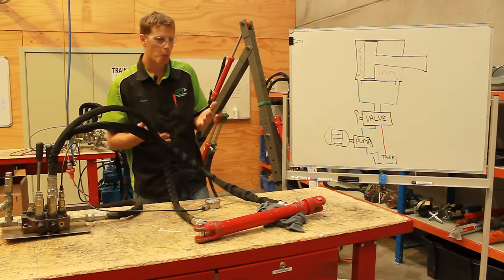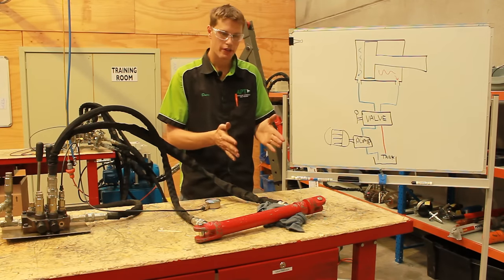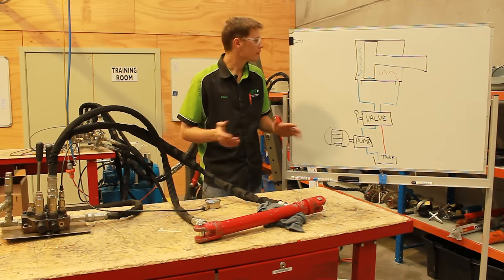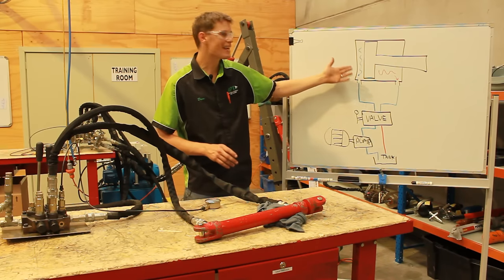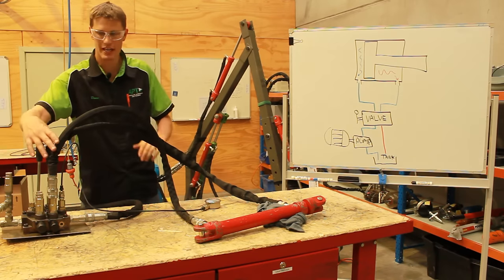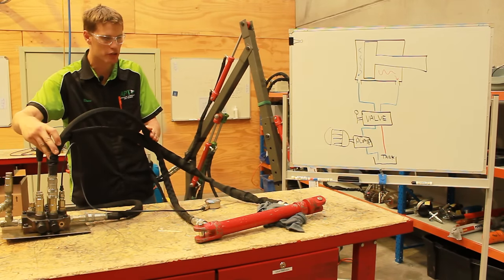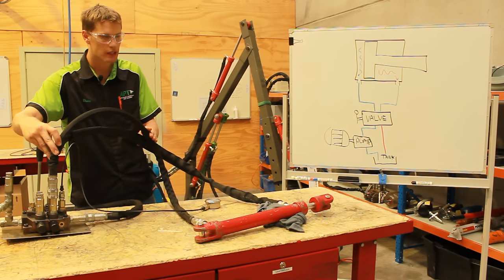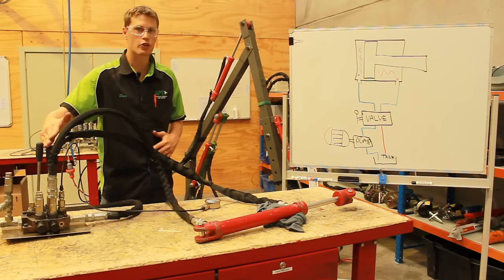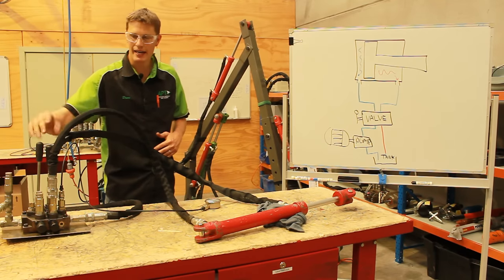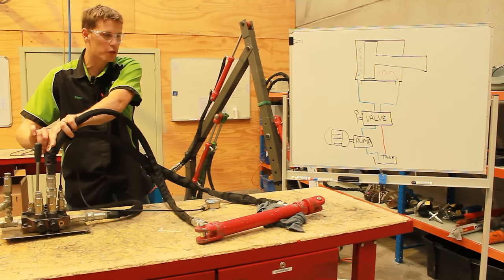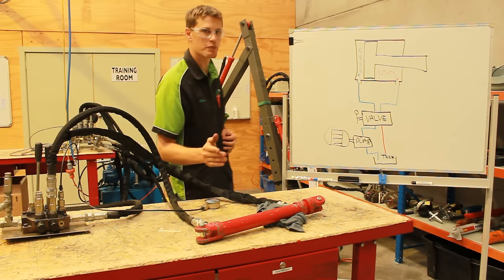What if I wanted it to move the same speed in both directions? Or what if I just wanted to change the maximum speed of the cylinder? To a certain extent I can control the speed simply by how far I push the directional control valve — I can slow it down or speed it up. But that's not always practical, and it doesn't allow me to limit it, because any operator can still pull the lever full force and get maximum speed.